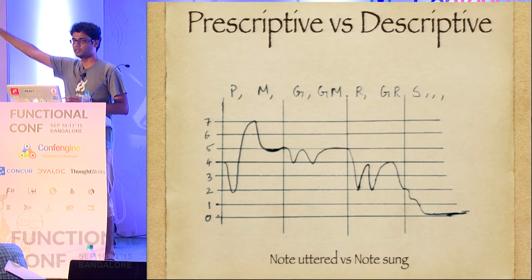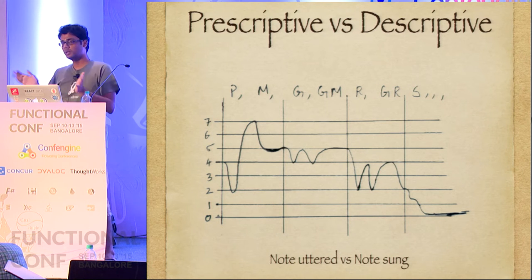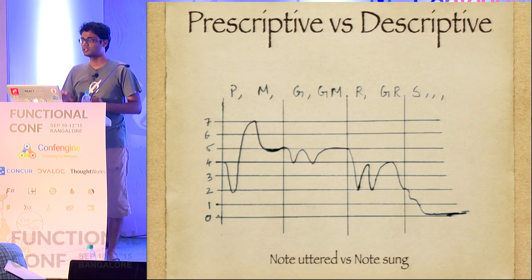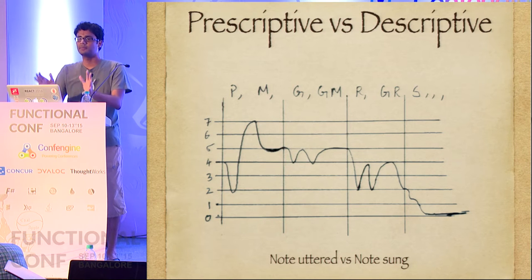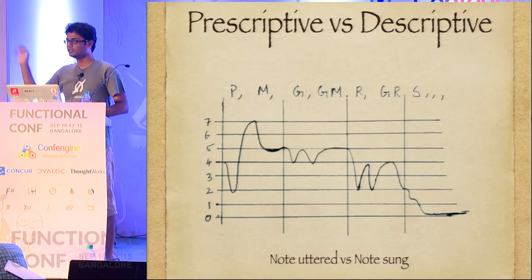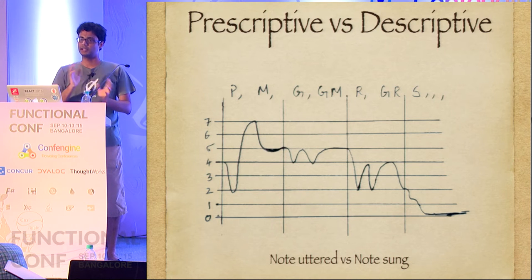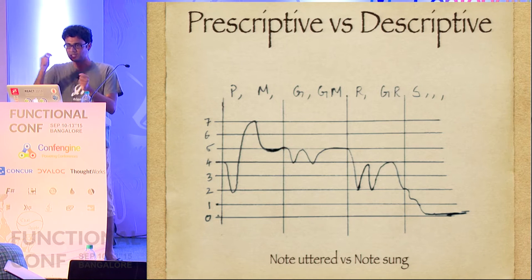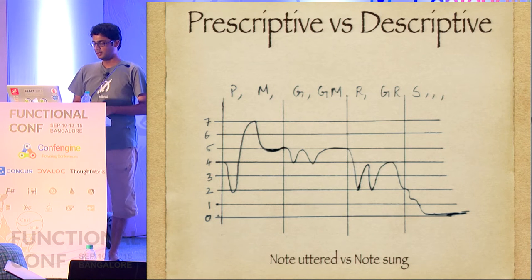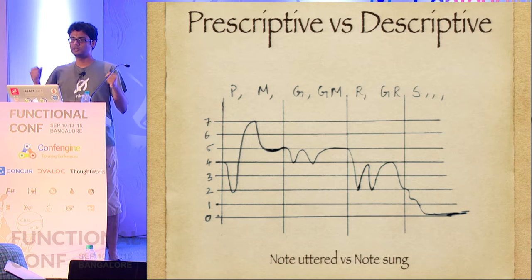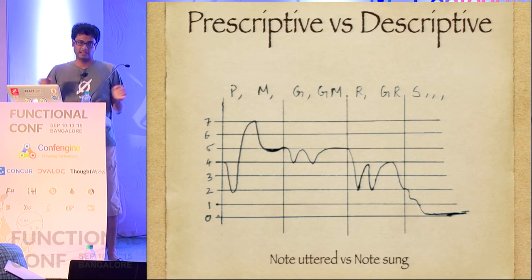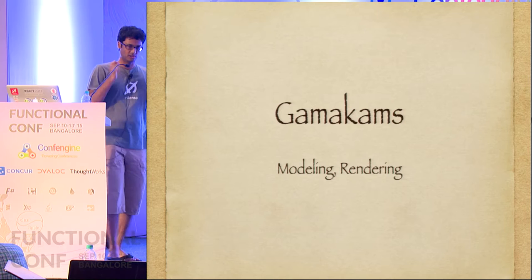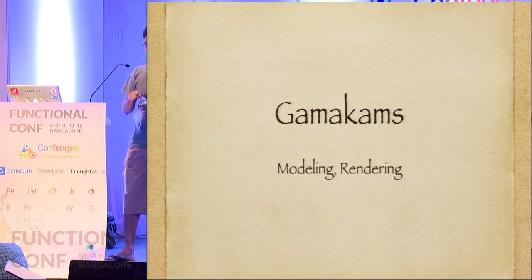That combination is just lost in the notation, but that's how it actually sounds. What's worse is that when I actually sing this, I would say 'pa' - I would not say 'ma, ri, pa.' So that's the difference between the note I utter and the note I sing. Even if I'm saying that thing, I'm actually singing three notes. So what are these things - do they have names? They have, and these are called Gamakas, which I promise I will get to now.